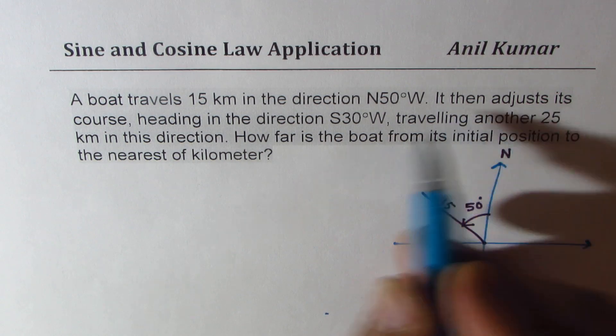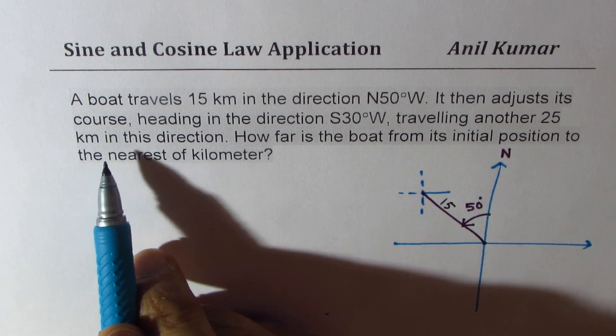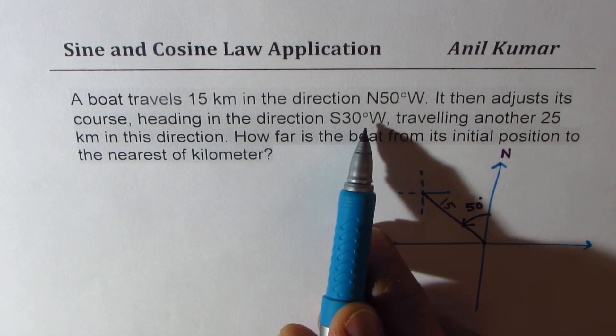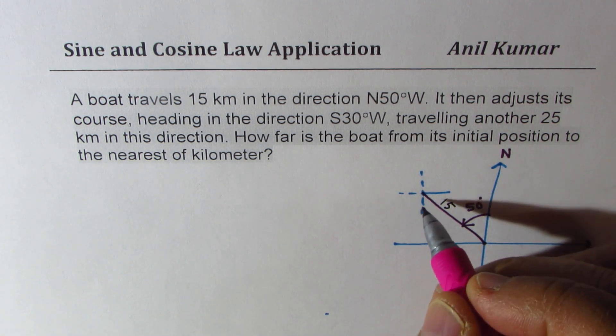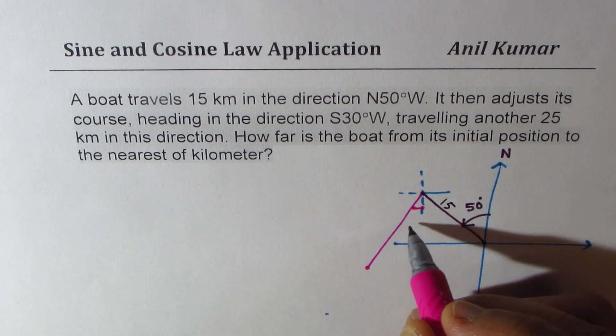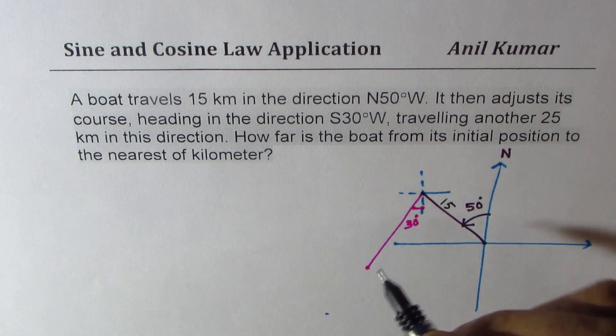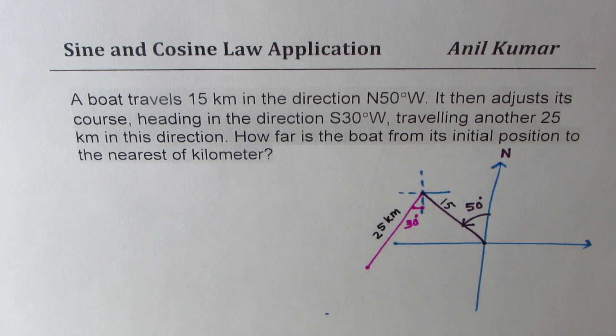Now, then he adjusts his course. We will again make our coordinate here. Heading in the direction 30 degrees west from south. From south, 30 degrees west. Let's say the angle now is kind of like this, in this direction. So this angle is 30 degrees. And how much distance it travels? Another 25 kilometers. So let this be 25, all units distance in kilometers.